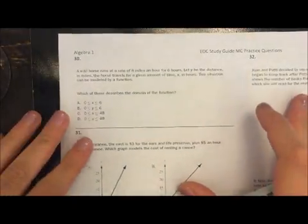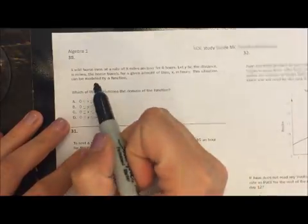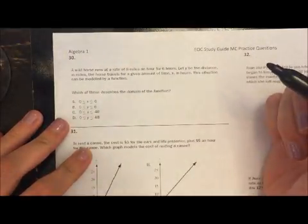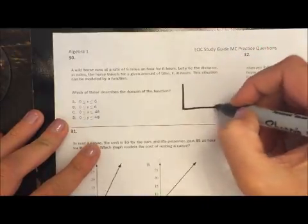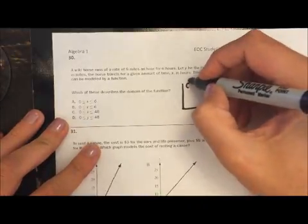Alright, so we're going to work through questions 30 through 33. A wild horse runs at a rate of 8 miles an hour for six hours. Let y be distance. Okay, so if we're graphing this, my y-axis would be distance.